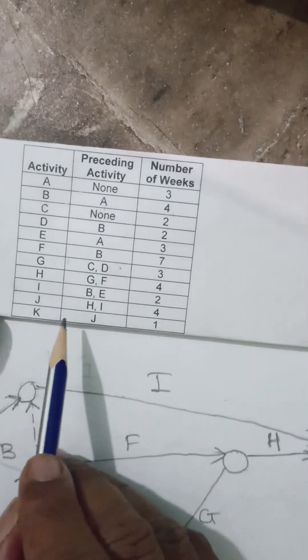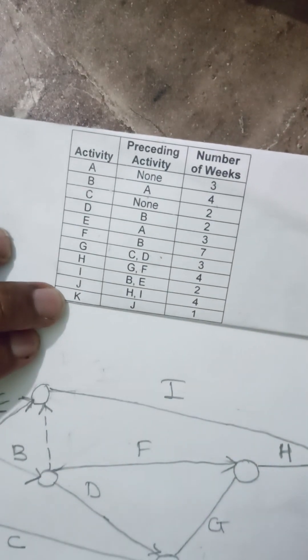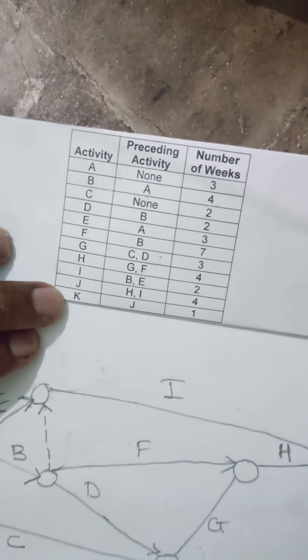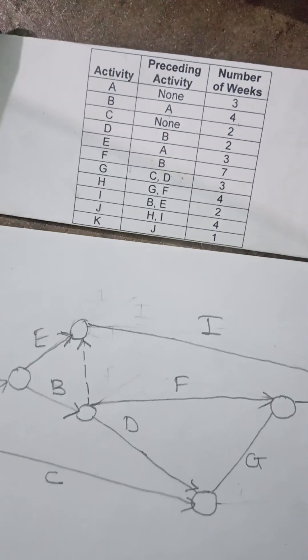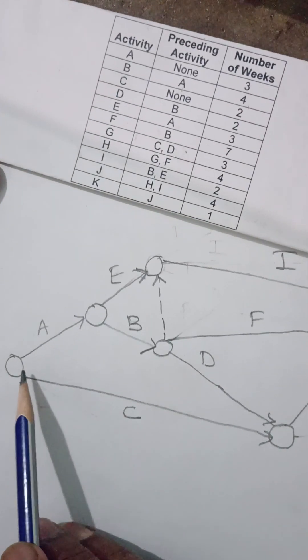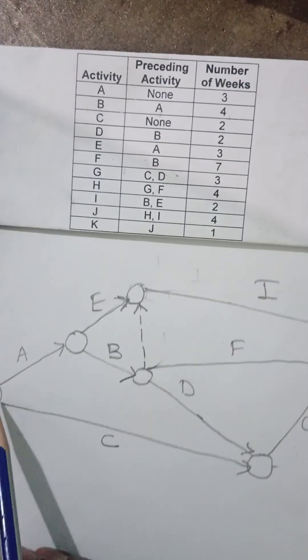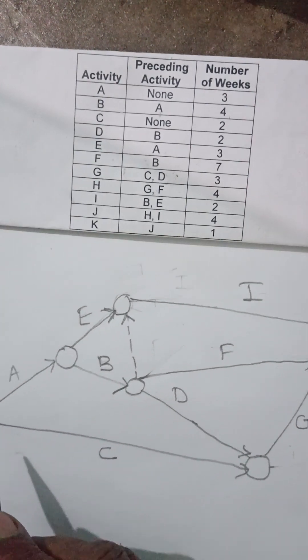This is my J, and my last activity is K. This is how I have drawn my network diagram, starting from this node and ending here. I can quickly give the numbers to the nodes.